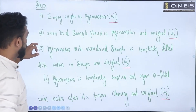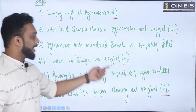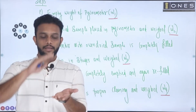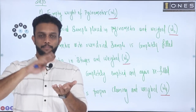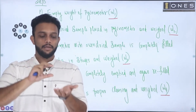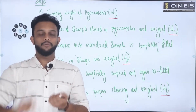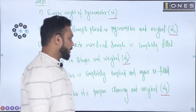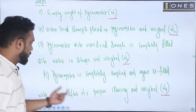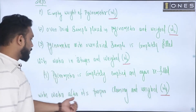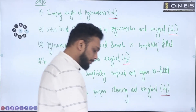Step three: the pycnometer with the solid soil sample is completely filled with water and weighed. We fill a little bit of oven-dried sample, then fill water into the remaining space. Step four: the pycnometer is completely emptied and again refilled with water after proper cleaning and weighed. That is W4.